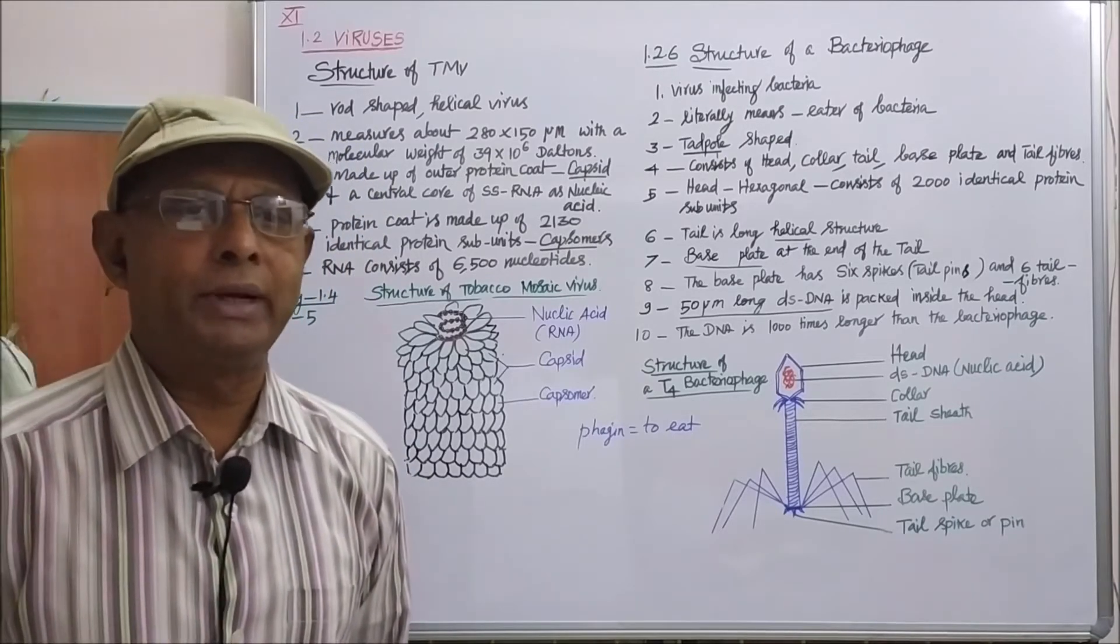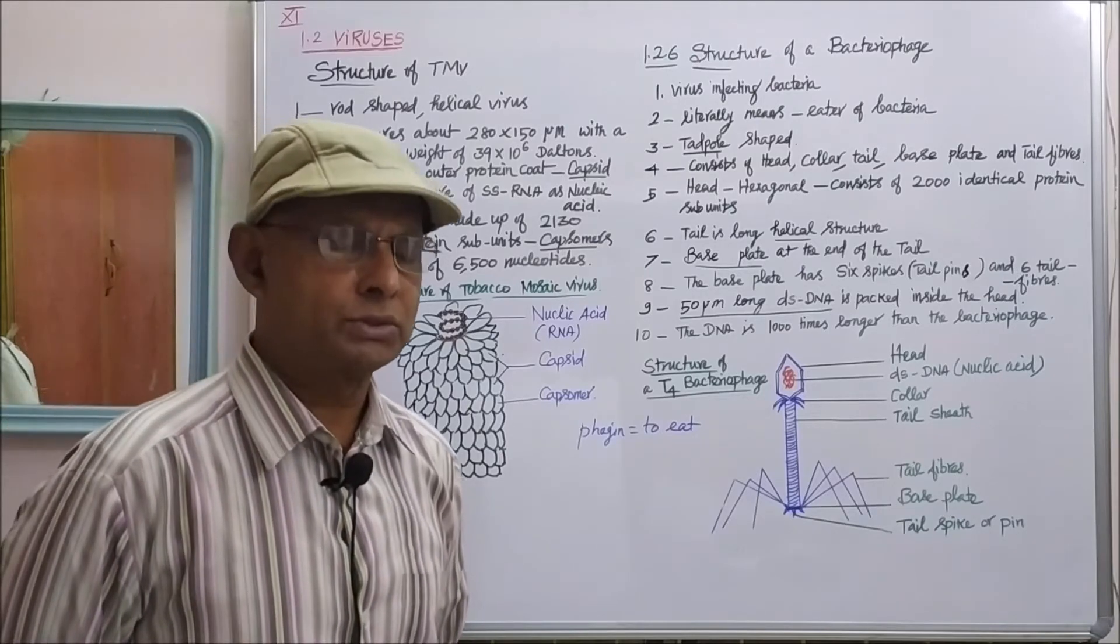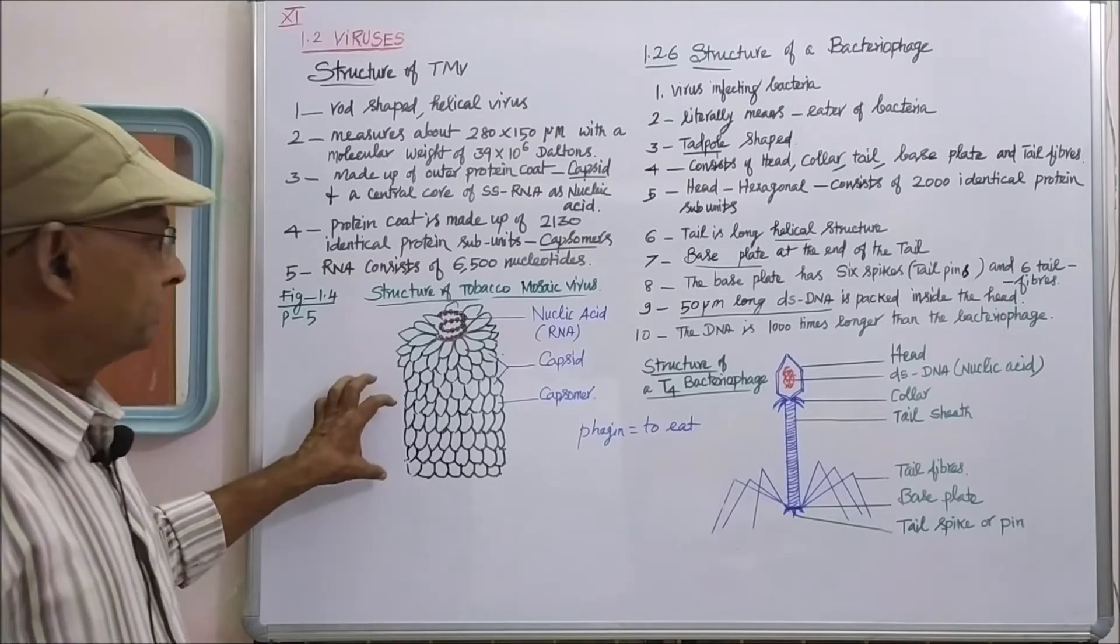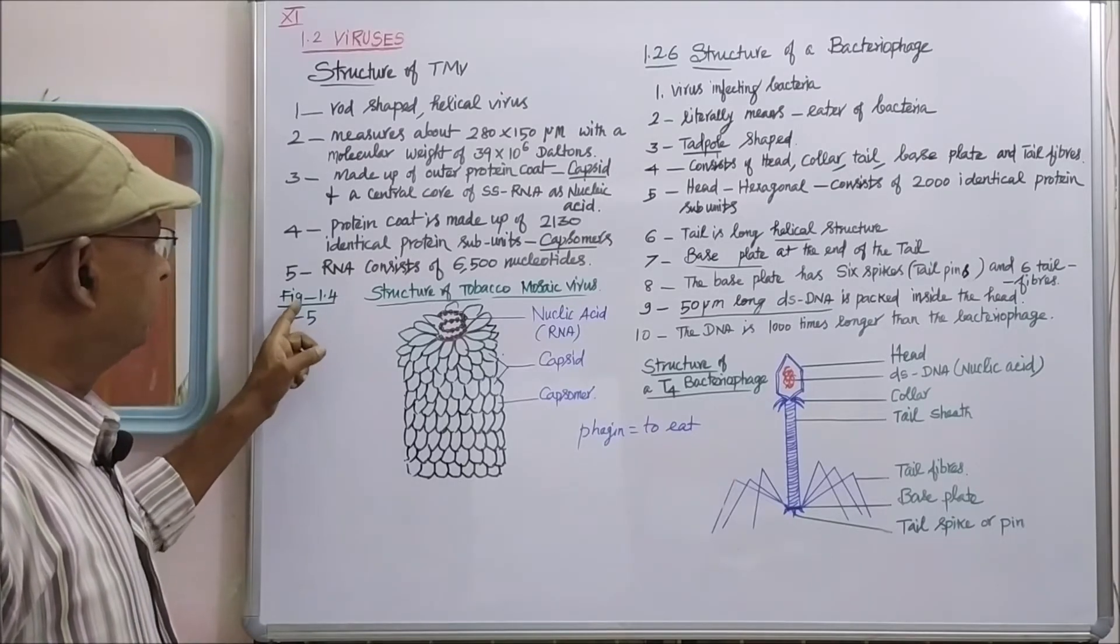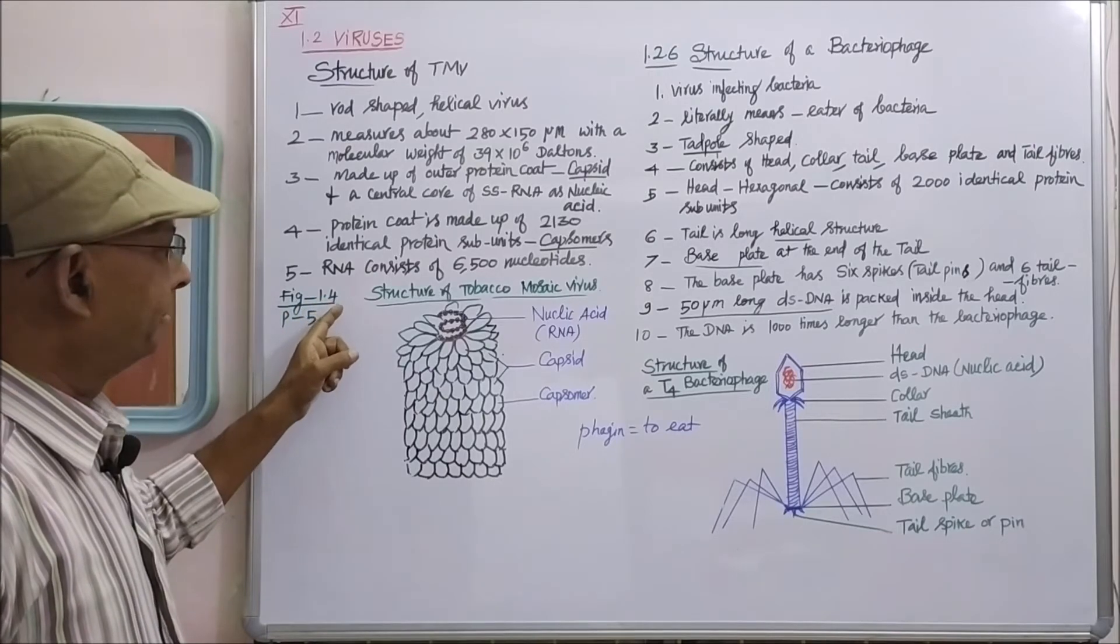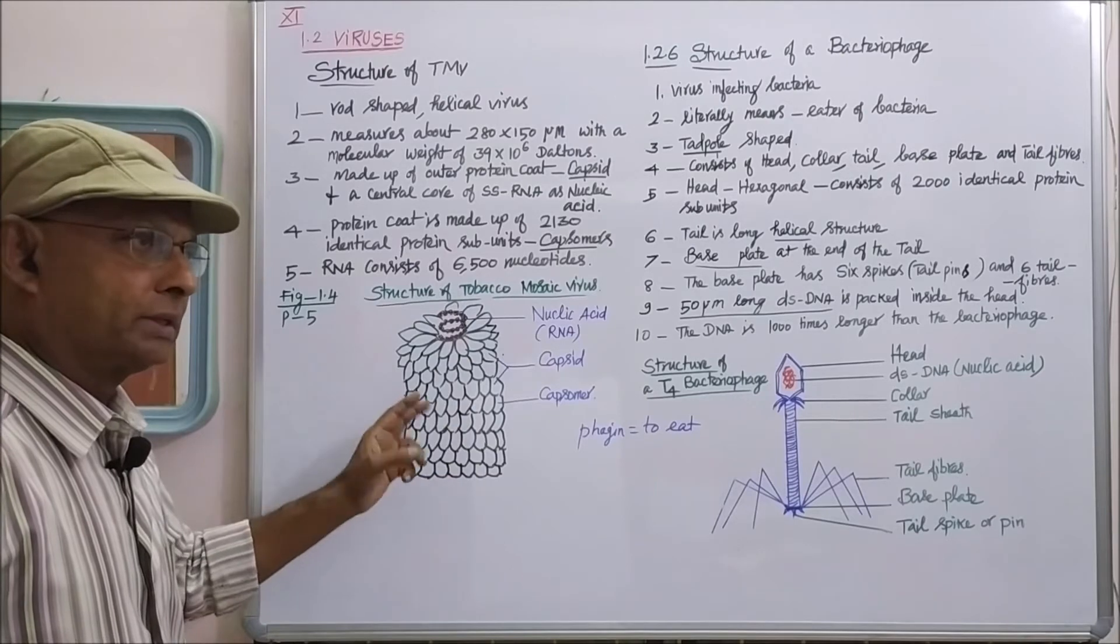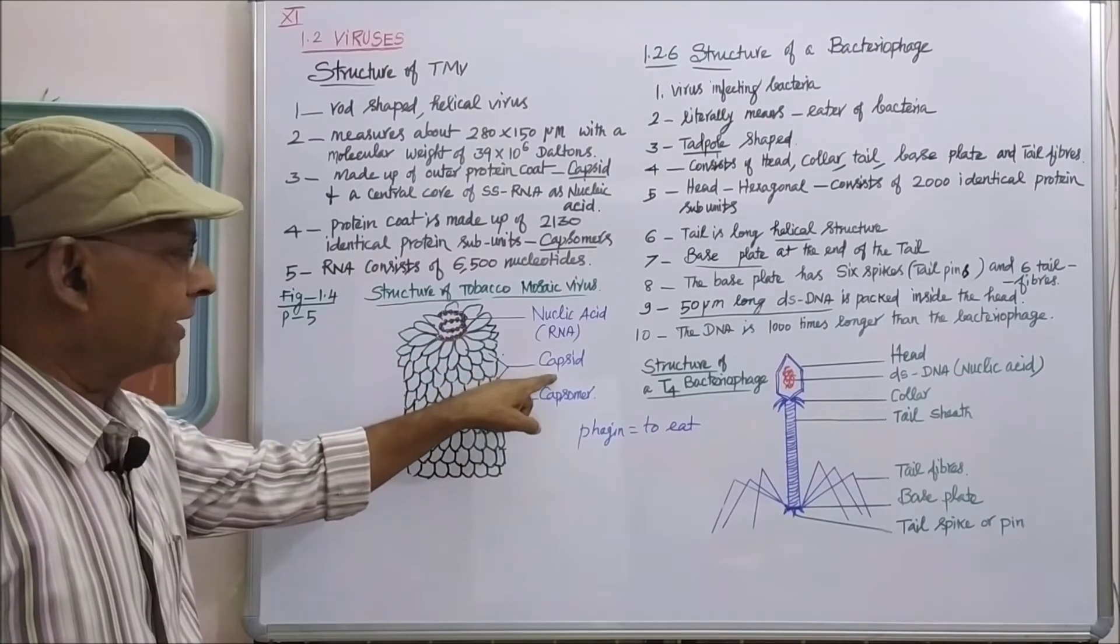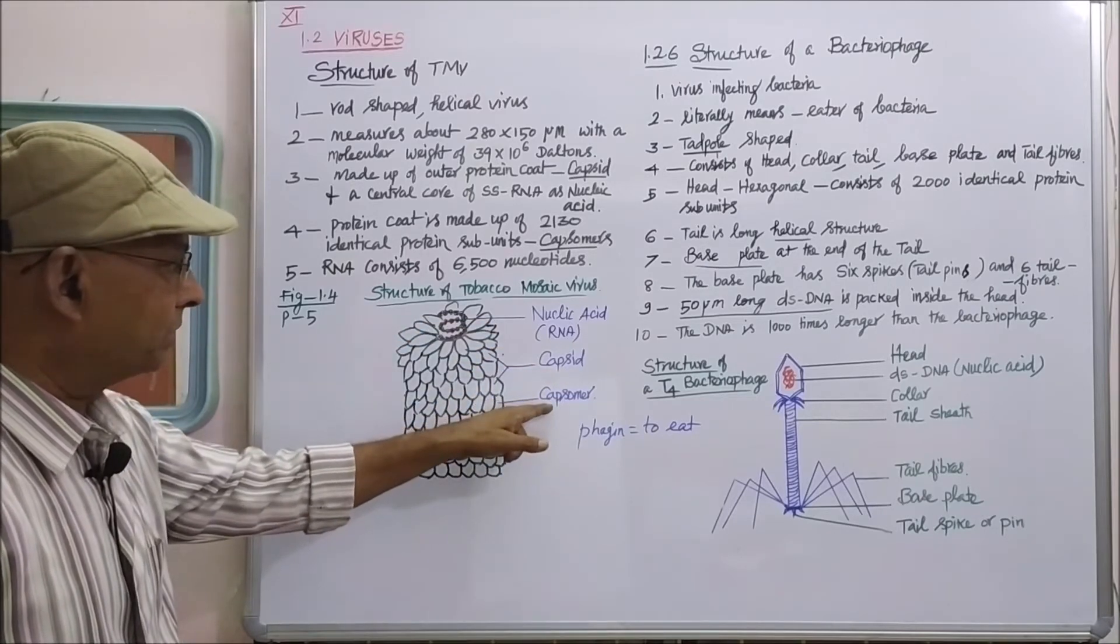This is all the information for the structure of tobacco mosaic virus. The diagram is given in page number 5, figure 1.4. It is a helical virus, rod-shaped virus, consisting of only two parts: outer protein coat called capsid, which consists of subunits called capsomeres.